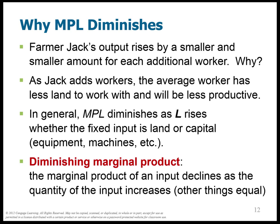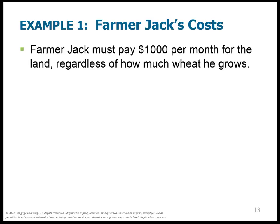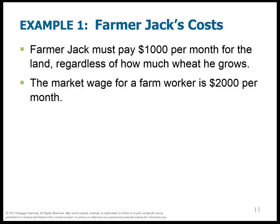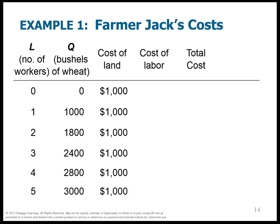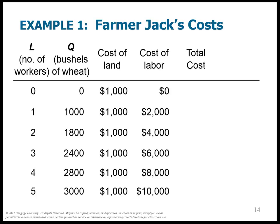Let's look at an example. Farmer Jack is paying $1,000 per month for the land — either as rent or as his opportunity cost if he owns it. The market wage for a farm worker is $2,000 per month, no matter how many workers he hires. So Farmer Jack's costs are related to how much wheat he produces. The cost of labor is just $2,000 per worker, and total cost is simply land cost plus labor cost.